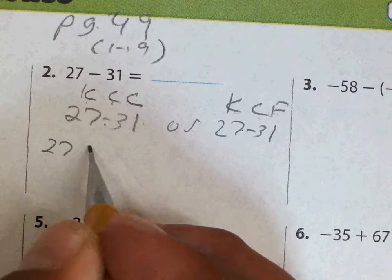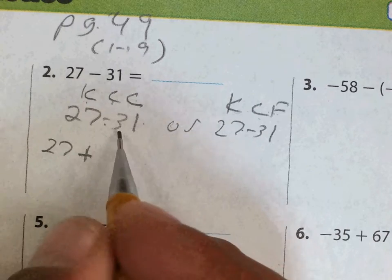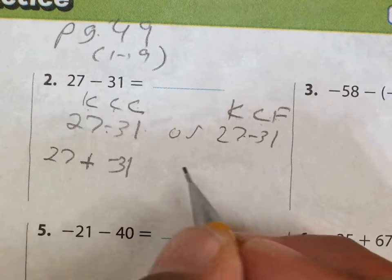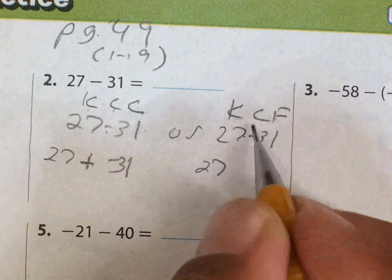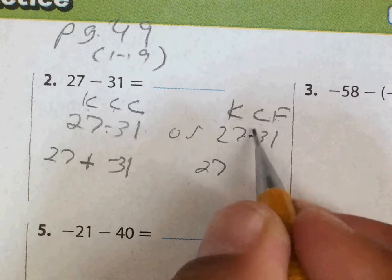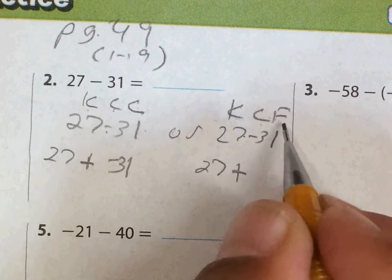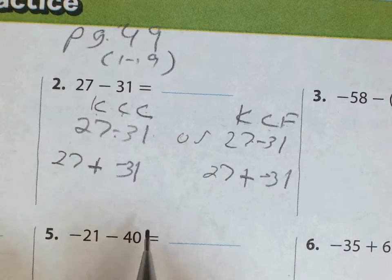Keep the 27, change minus to positive—I'm sorry, to plus—and then this positive 31 I'm gonna change to a negative 31. That takes the operation from subtraction to addition and then flip the positive 31 to a negative 31.